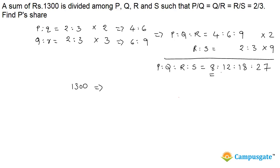P gets 8 parts out of the total parts. We add all the numbers: 8+12+18+27 = 65. So P's share is 8/65 × 1300. 65 goes 20 times into 1300, giving us 160. This is the amount that P will get.